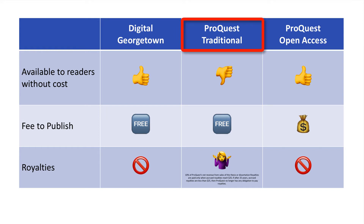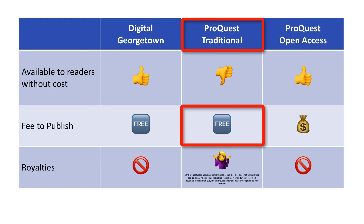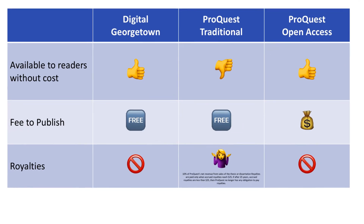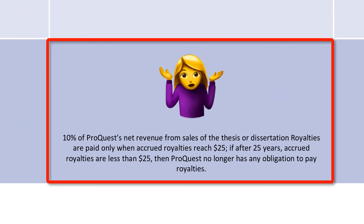With ProQuest's Traditional Publishing option, your work will be available in ProQuest's Dissertation and Theses database, a subscription database generally available only at college and university libraries. Only subscribers to this database will be able to view, download, and print the full text of your work. For non-subscribers, the full text may be purchased through PQDT. You pay no fee to ProQuest for Traditional Publishing, although the possibility of earning royalties is highly unlikely for most authors.